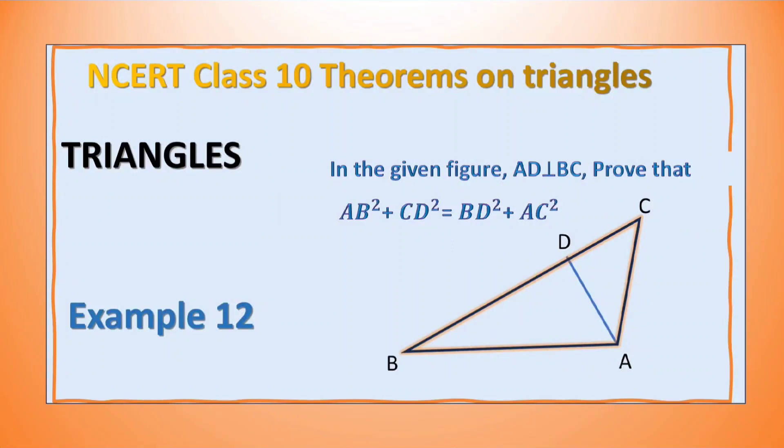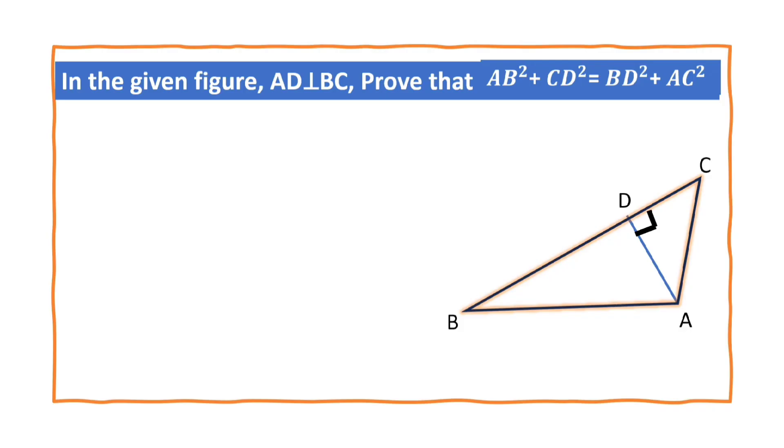In the given figure, AD is perpendicular to BC. Prove that AB² + CD² = BD² + AC². What is given in the figure? You can observe that AD is perpendicular to BC.